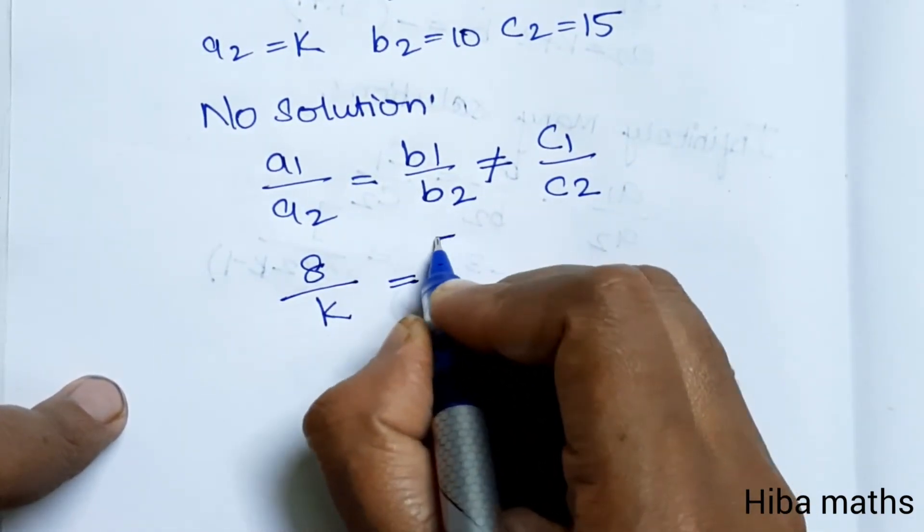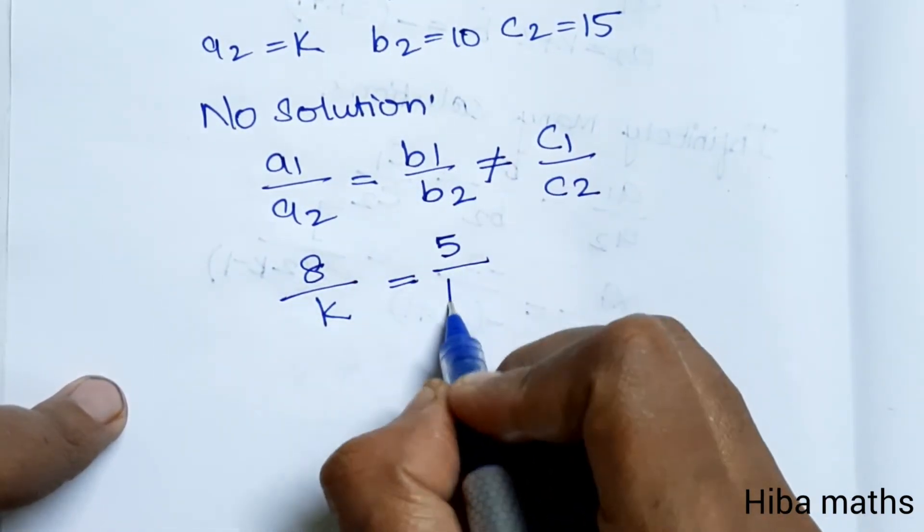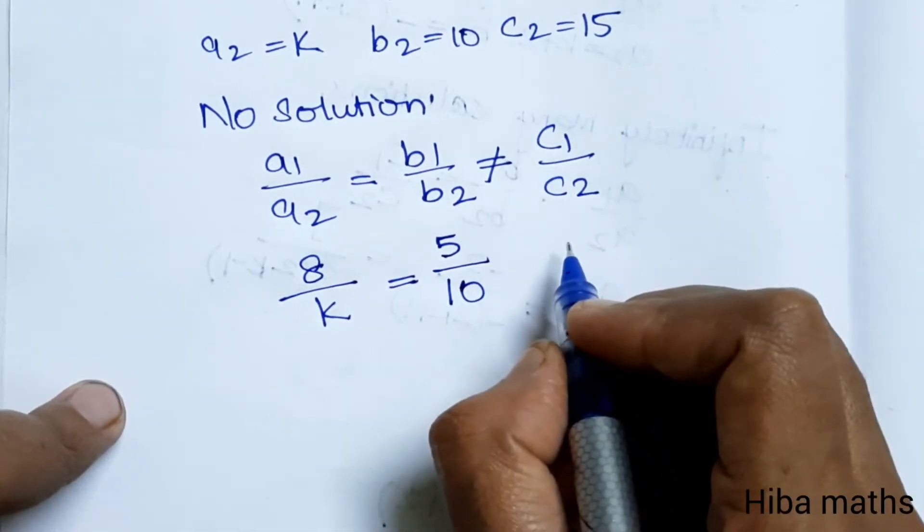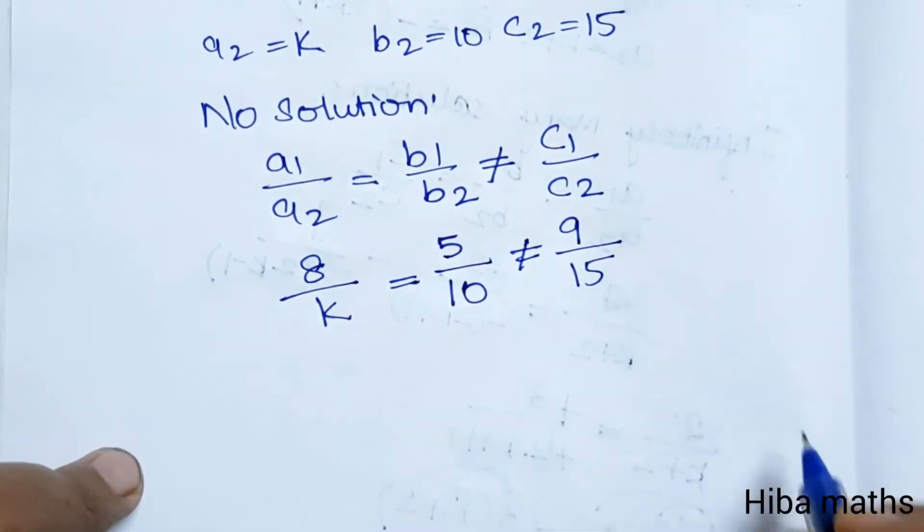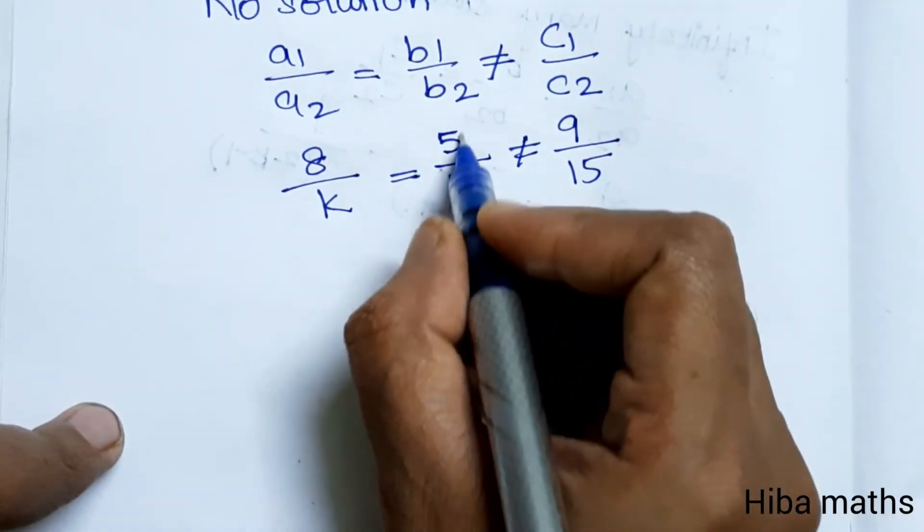This gives us 8/k = 5/10. We also verify this doesn't equal c1/c2, which is 9/15.